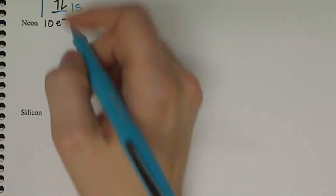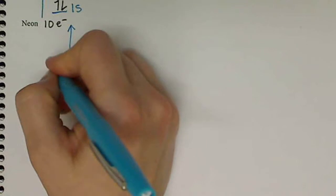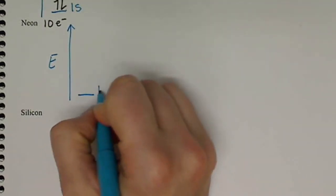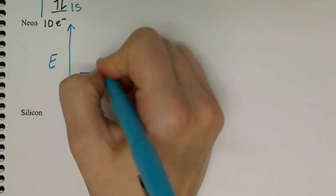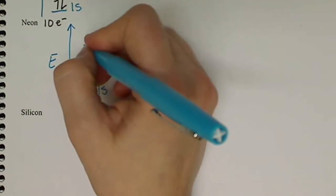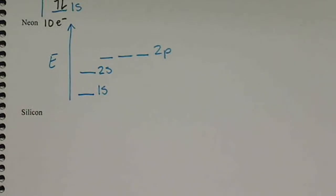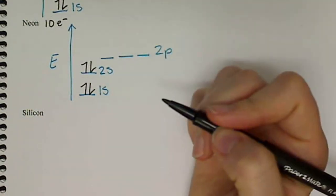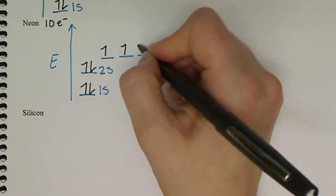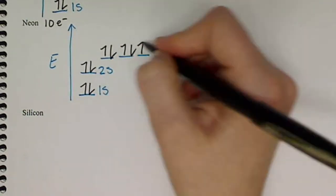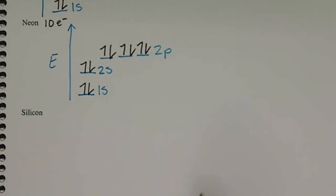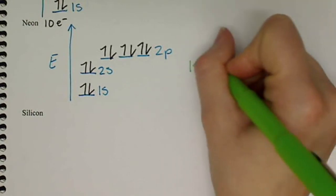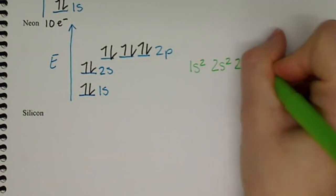We have neon and silicon. Neon has 10 electrons. So if we put its energy level diagram, we have 1s, 2s, 2p. We have 10 electrons, so we have 1, 2, 3, 4, 5, 6, 7, 8, 9, 10. Electron configuration, we have 1s2, 2s2, 2p6.